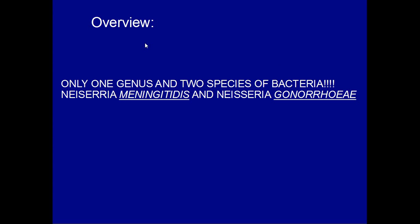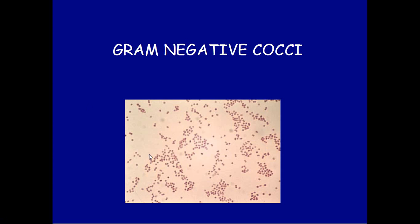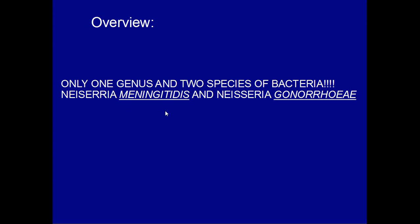The good news is there's only one genus you really need to worry about, and that's Neisseria. So if you see something that looks like this, you should immediately think Neisseria. The species have exactly what they cause in their name: Neisseria meningitidis causes meningitis, and Neisseria gonorrhoeae causes gonorrhea. One genus, Neisseria; two species, meningitidis and gonorrhoeae; two diseases.